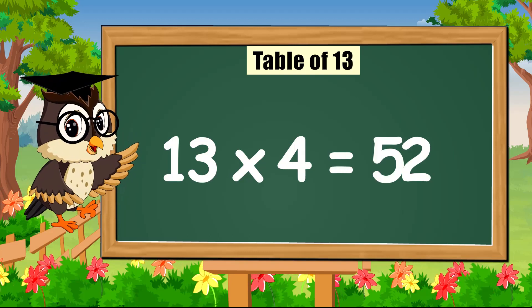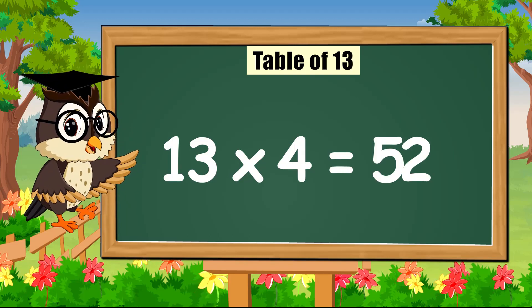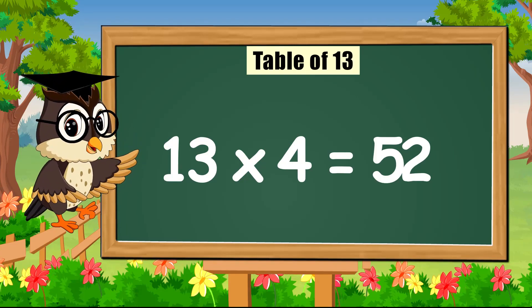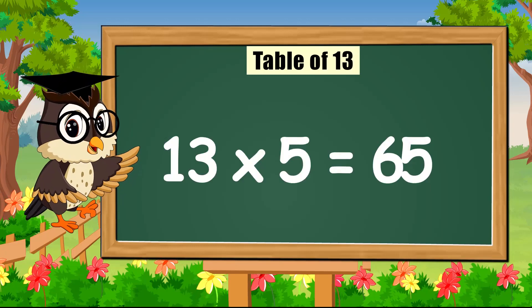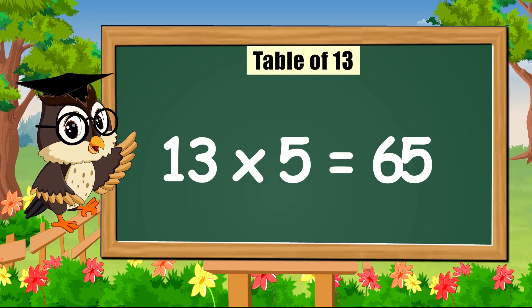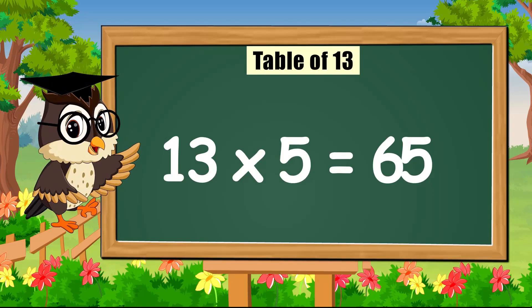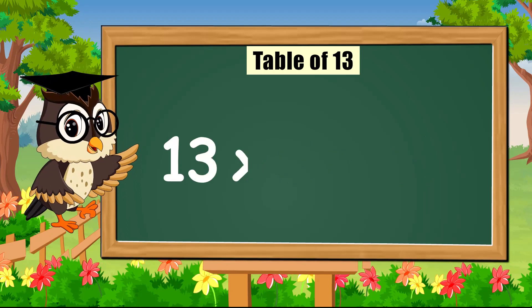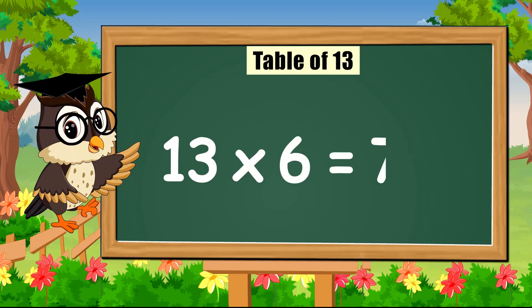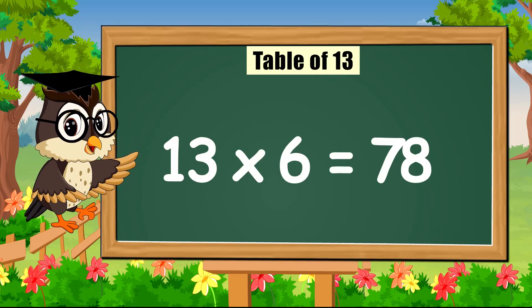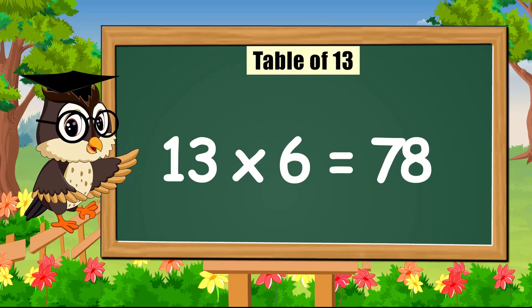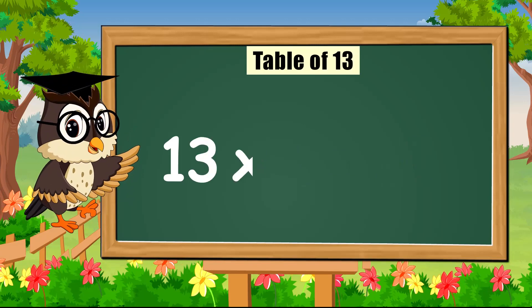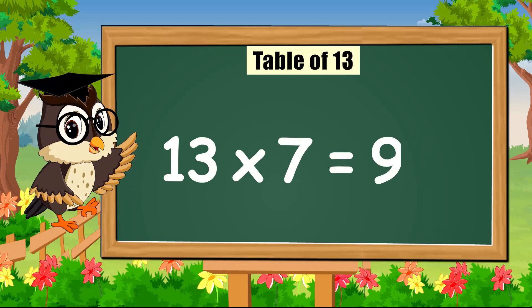Thirteen times three is thirty-nine. Thirteen times four is fifty-two. Thirteen times five is sixty-five. Thirteen times six is seventy-eight.